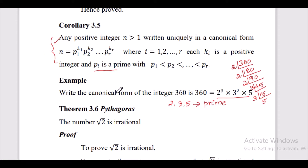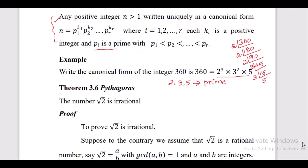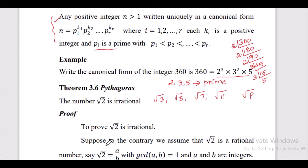Now here is the proof. We have to prove that the square root of 2 is irrational. More generally, the square root of 2, square root of 3, square root of 5, square root of 7, square root of 11 — in general, the square root of any prime p is irrational. We can prove it by looking at one example.